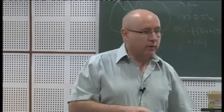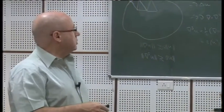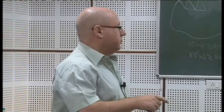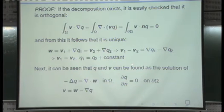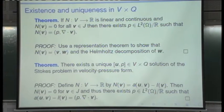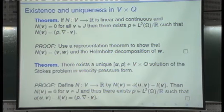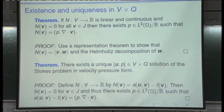Babuška wrote this in the context of finite elements. Nečas proved it for variational problems, but it is essentially a consequence of a difficult theorem by Banach. In the finite element community it is known as Babuška's theorem, though that is not entirely fair. The analogy to keep in mind: for the algebraic problem BU = F, coercivity corresponds to B being positive definite (all eigenvalues positive), which is sufficient but not necessary. What we really need is that B is non-singular, which is equivalent to the bilinear form satisfying the inf-sup condition.